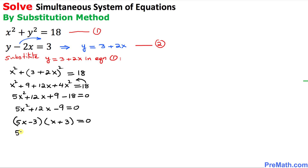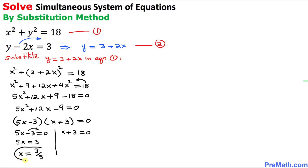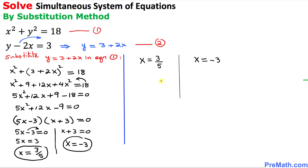Since these two factors equal zero, we can split them: 5x − 3 = 0 gives x = 3/5, and x + 3 = 0 gives x = −3. So our two x values are x = 3/5 and x = −3.